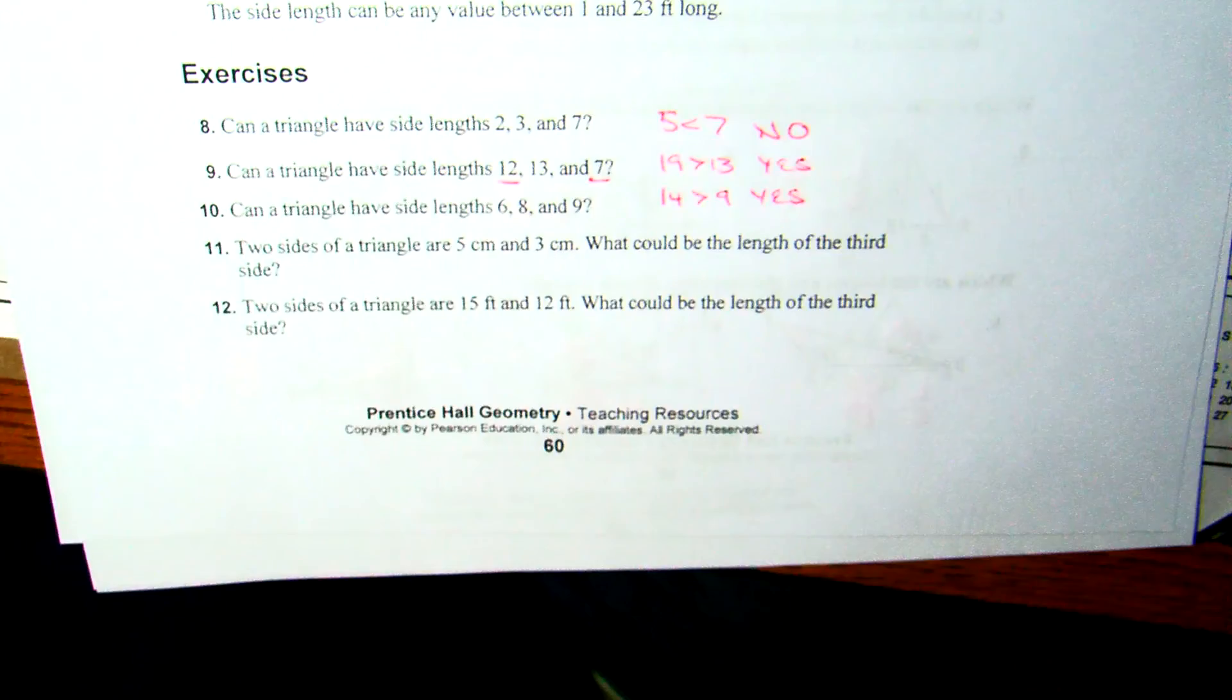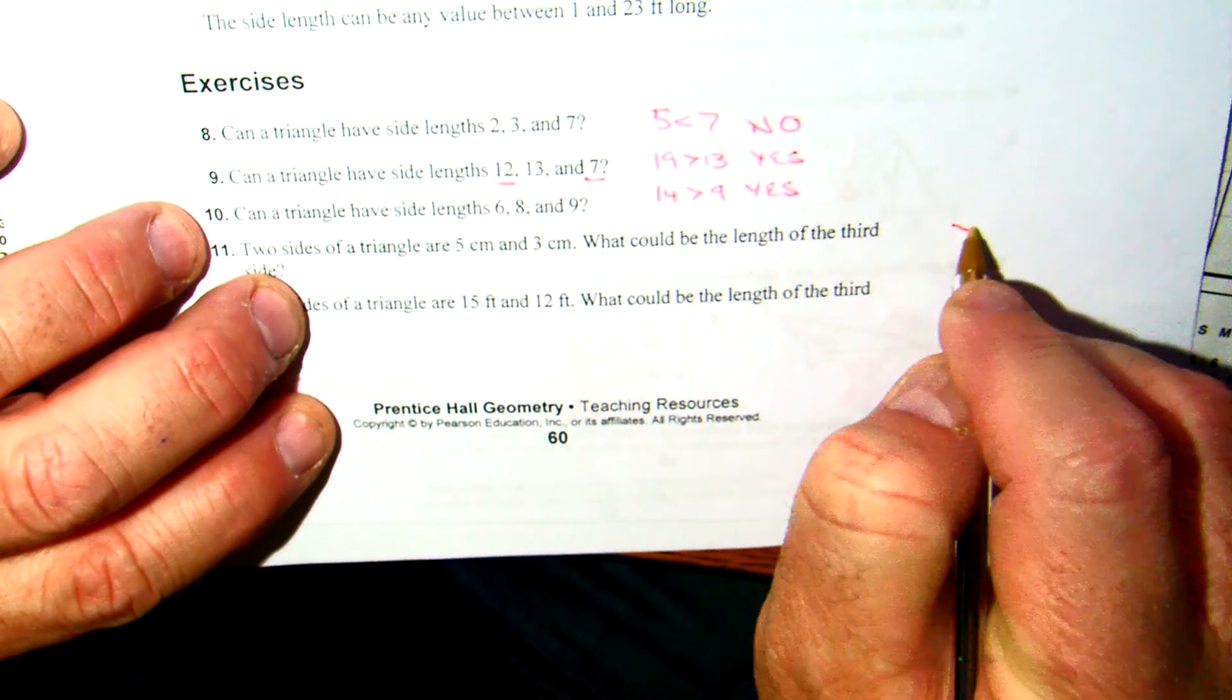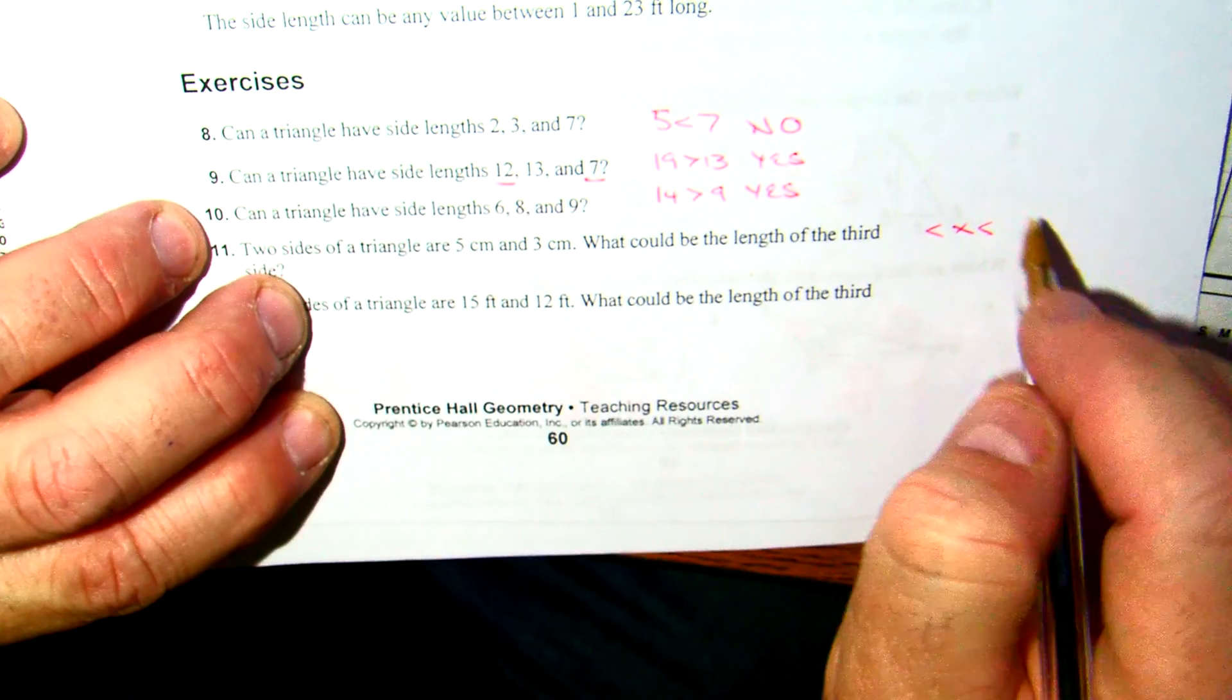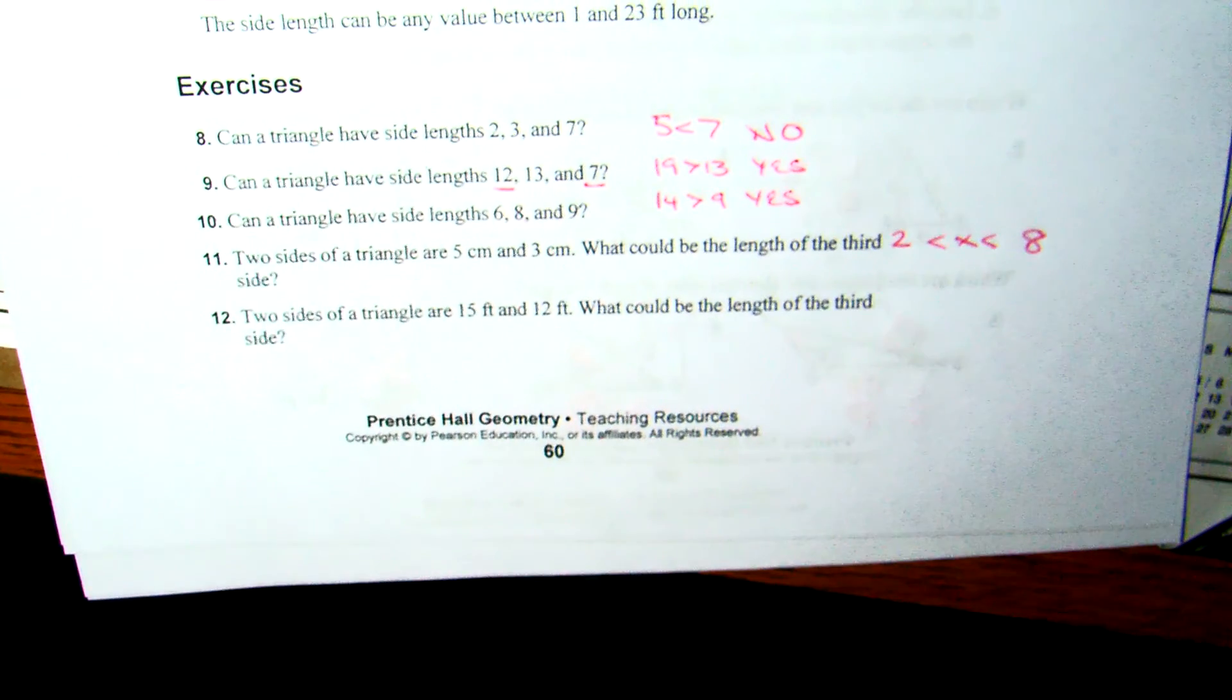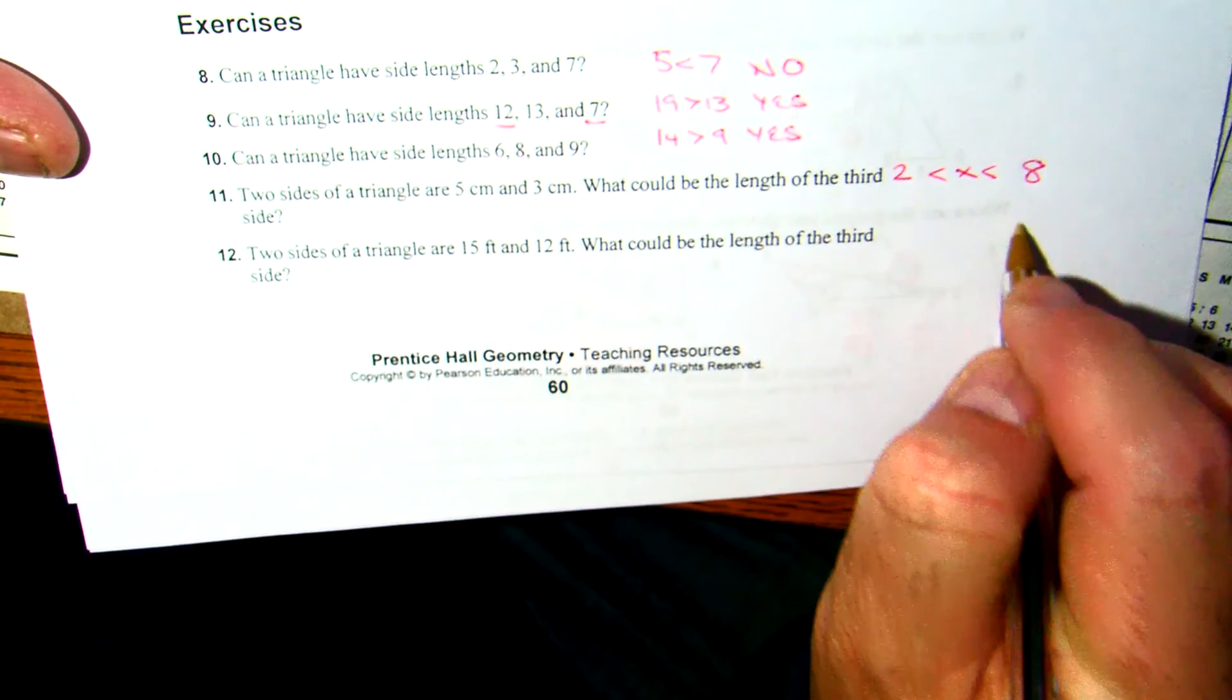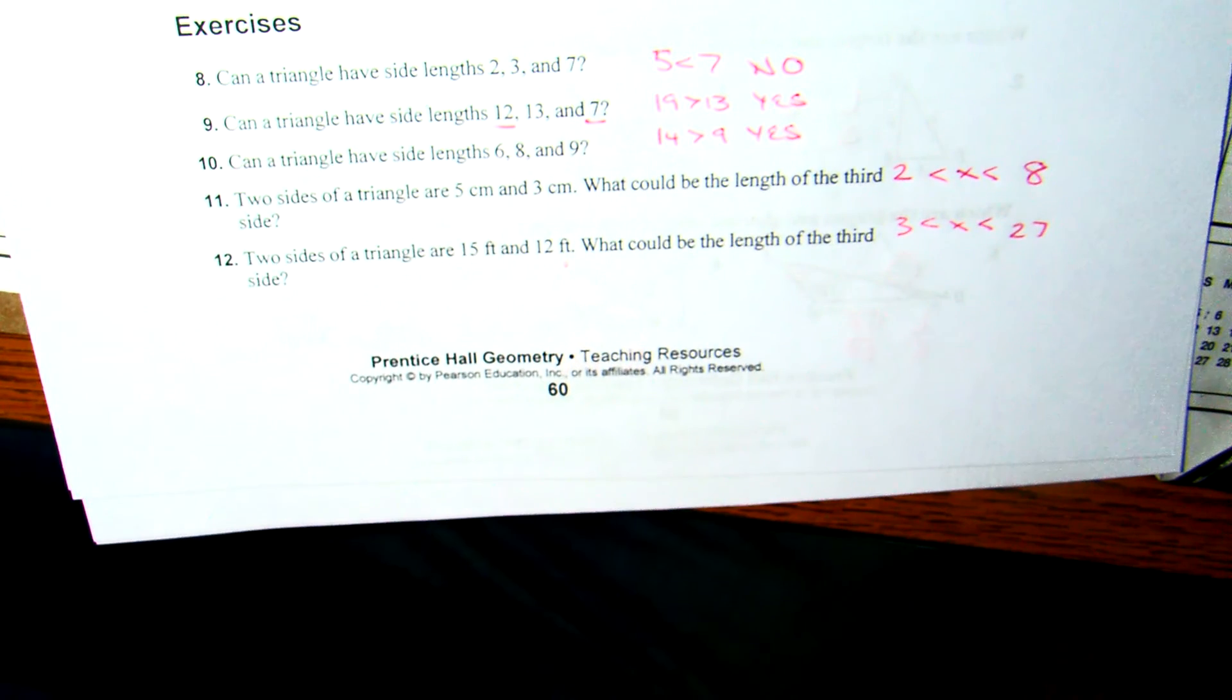So if I come down to the bottom, two sides of a triangle are 5 and 3, what could be the length of the third side? Again, put your variable in the middle. Inequality is open to the right. 5 plus 3 is 8. So that goes on the right. 5 minus 3 is 2. You can always check to make sure the numbers make sense. Same idea with the next one. 15 plus 12 gives me 27. 15 minus 12 gives me 3. And the third side would have to be 3 to 27.